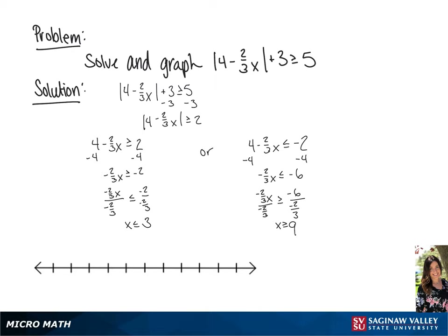So we have two solutions: x is less than or equal to 3 or x is greater than or equal to 9. In interval notation, this will be negative infinity to 3, union with 9 to positive infinity.